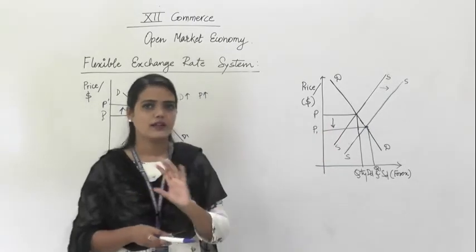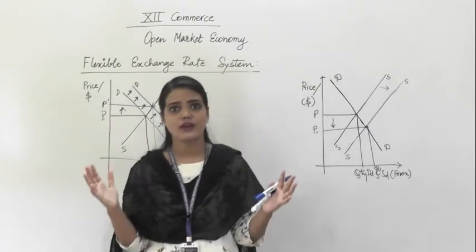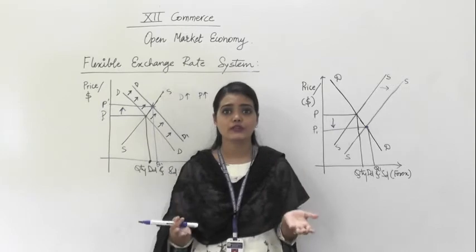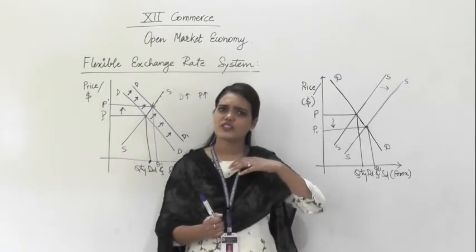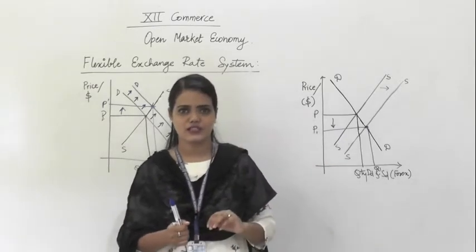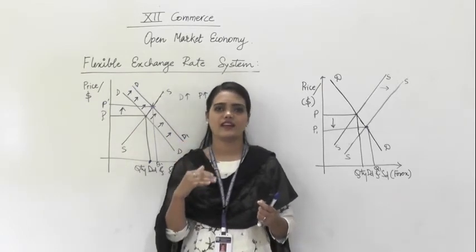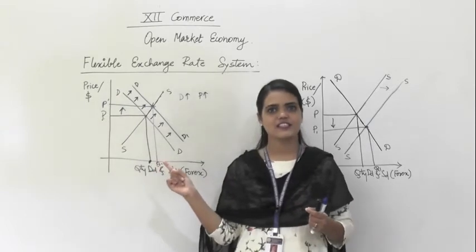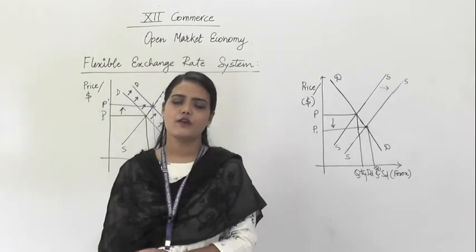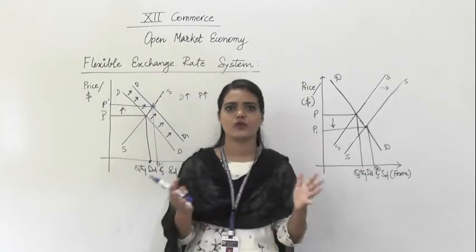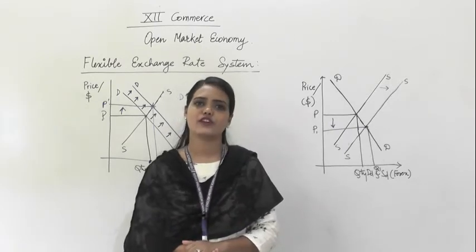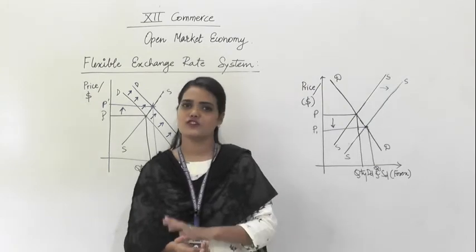To summarize: when there is excess demand, it leads to price rise and the currency depreciates. When there is excess supply, prices fall and the currency appreciates. When prices increase, currency depreciates; when prices decrease, currency appreciates. This is the entire working of the flexible exchange rate system. You can also try changing both demand and supply simultaneously to get an insight into how the foreign exchange rate is demand-determined.